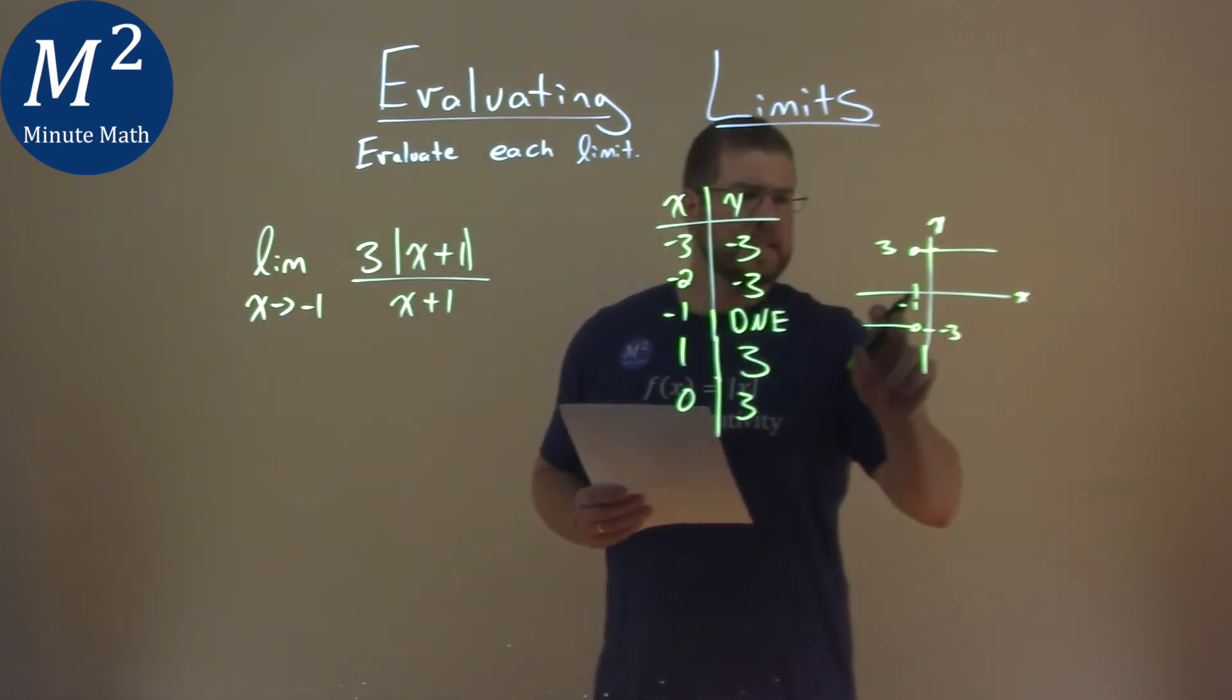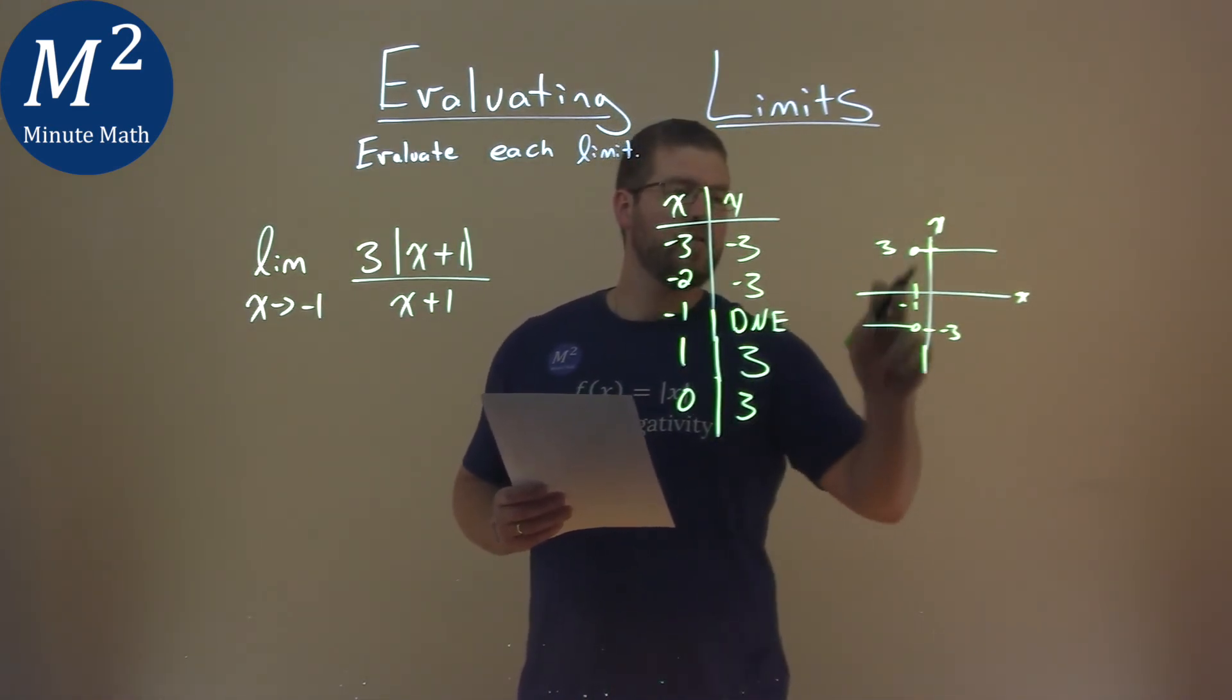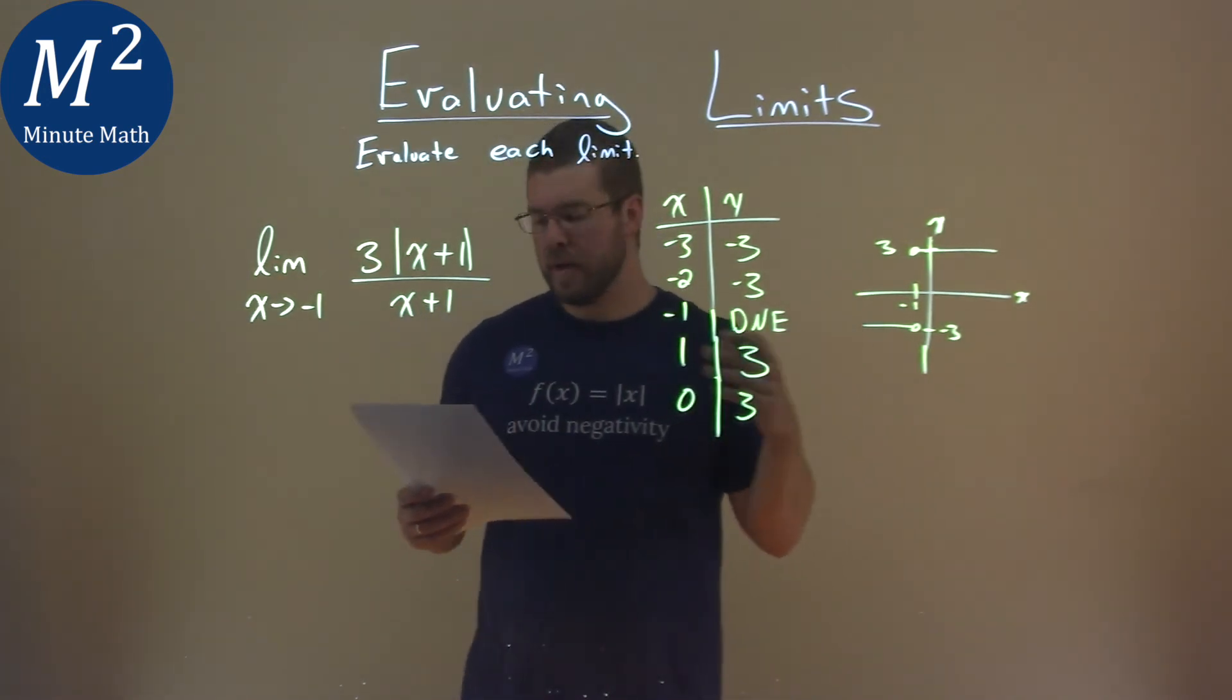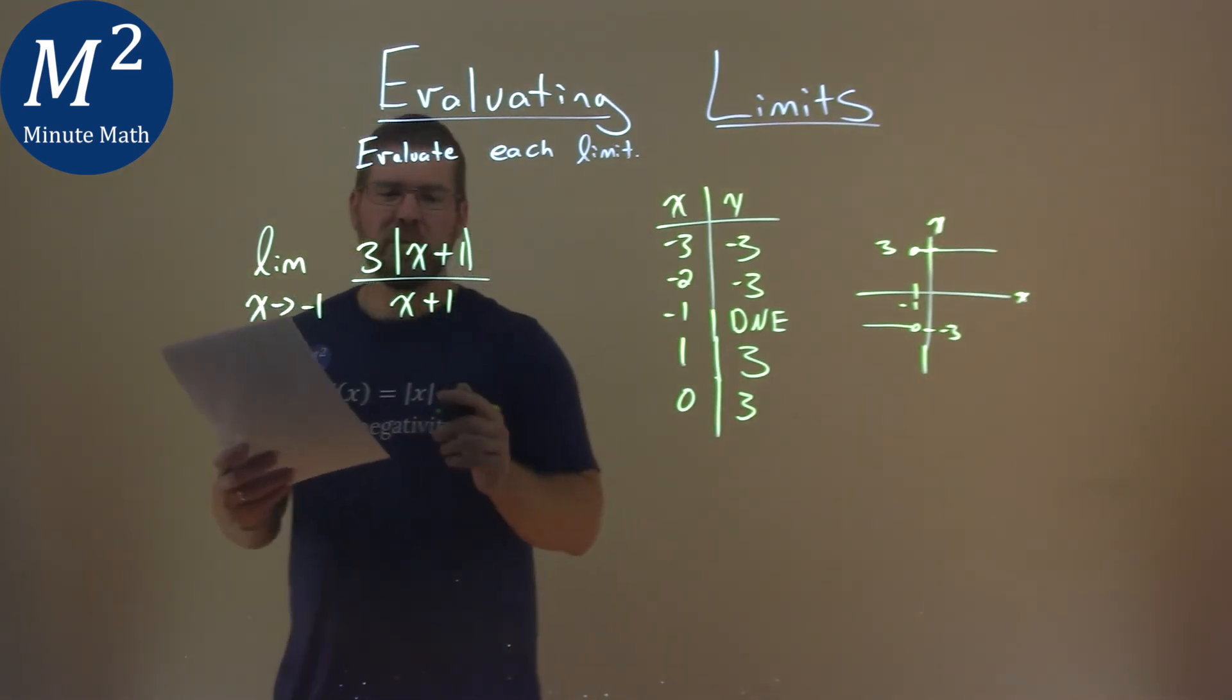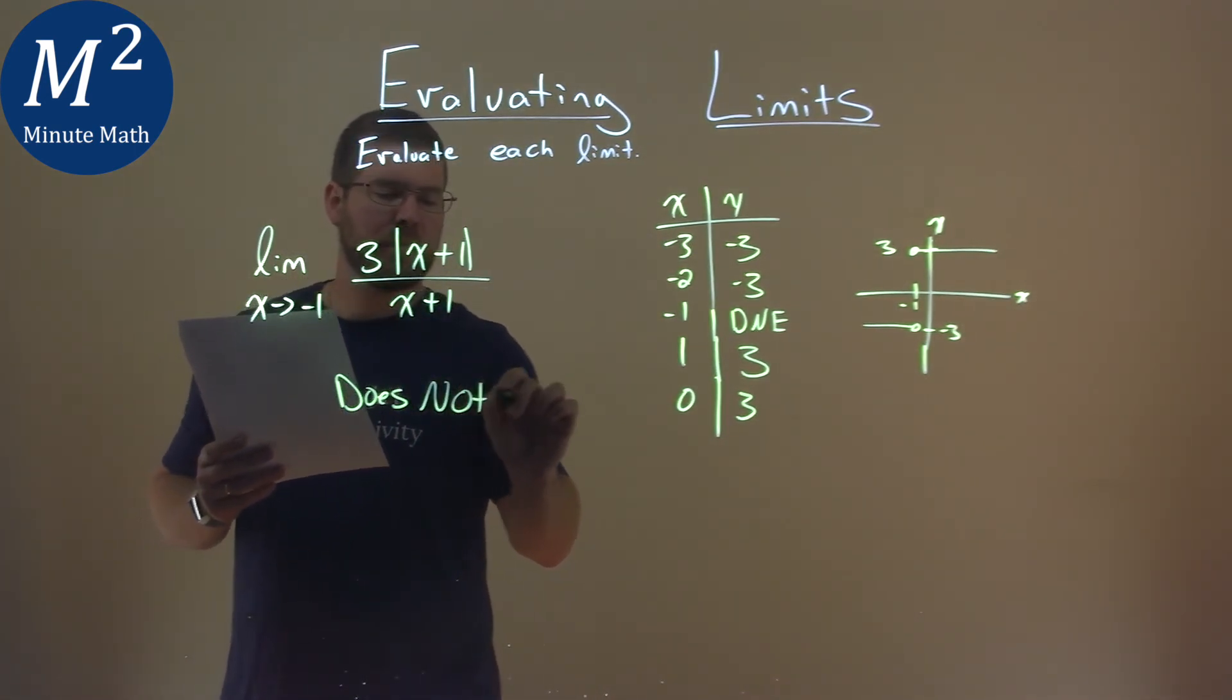Well, with that, we can see then from the negative 1 here, it has two different values that's approaching from the left and the right. So when that happens, when we push different values from the left and the right of negative 1 here, we would say that this limit does not exist.